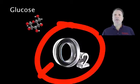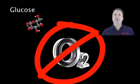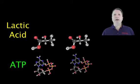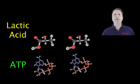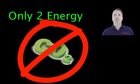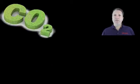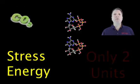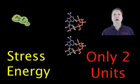Without oxygen, it's anaerobic or stress energy, and it splits glucose into 2 lactic acids and only 2 units of energy with no CO2. So when your body runs efficiently with oxygen, you produce a lot of CO2 and a lot of energy. When your body runs on the stress energy cycle, there's a shortage of both CO2 and energy.